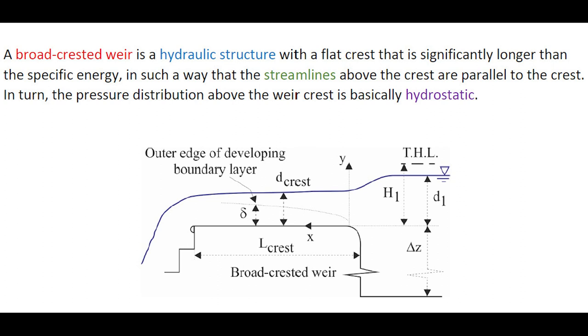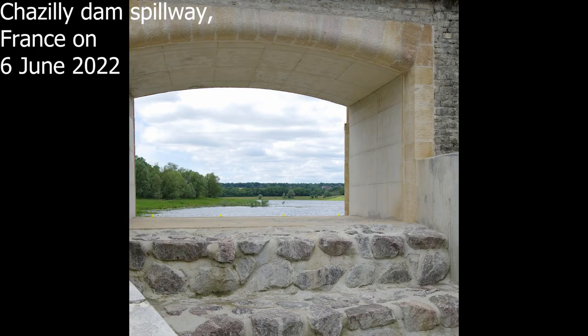Welcome to this talk on the broad-crested weir overflow. A broad-crested weir is a hydraulic structure with a flat crest that is significantly longer than the specific energy, in such a way that the streamlines above the crest are parallel to the crest. In turn, the pressure distribution above the weir crest is basically hydrostatic.